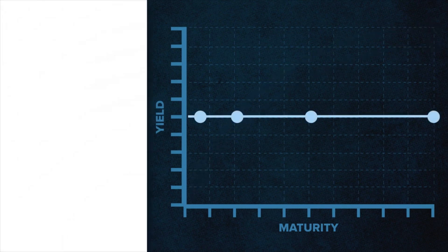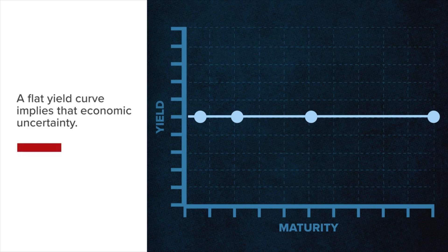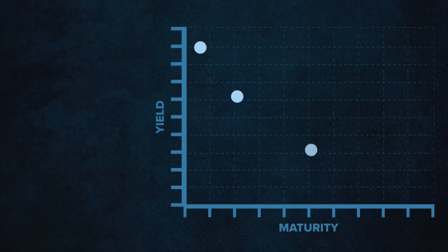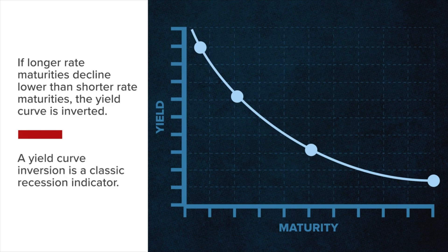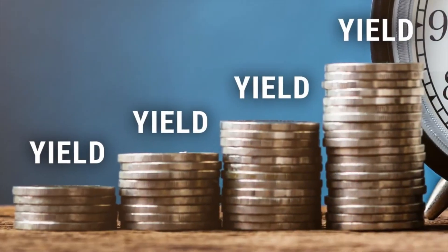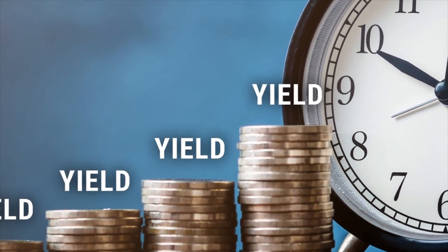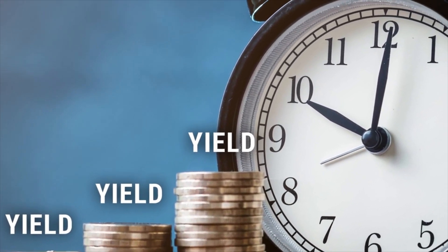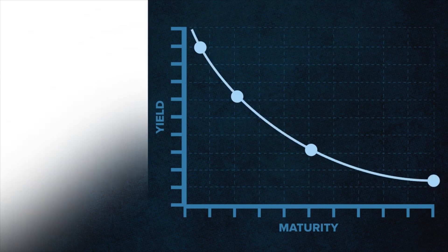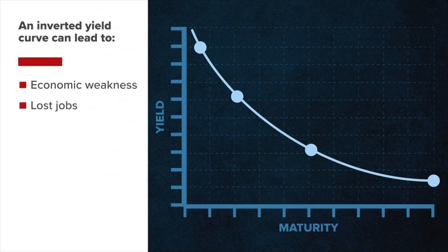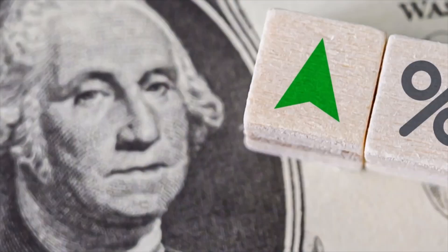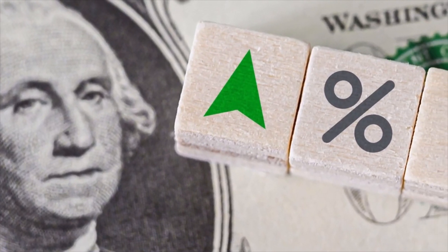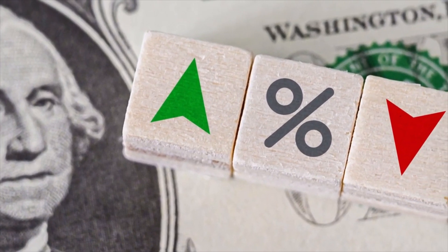A flat yield curve with similar yields across all maturities implies that there is economic uncertainty on the horizon. Should longer-rate maturities decline such that they are lower than shorter-rate maturities, the yield curve is said to have inverted. A yield curve inversion is a classic recession indicator that can predict contractions in economic activity. An inverted yield curve signals market imbalances that will likely lead to economic weakness, lost jobs, falls in tax revenue, falls in investment, and falling production. When market participants disagree with the Federal Reserve's policy on rate setting and bond purchases, distortions and inversions across the curve can manifest.